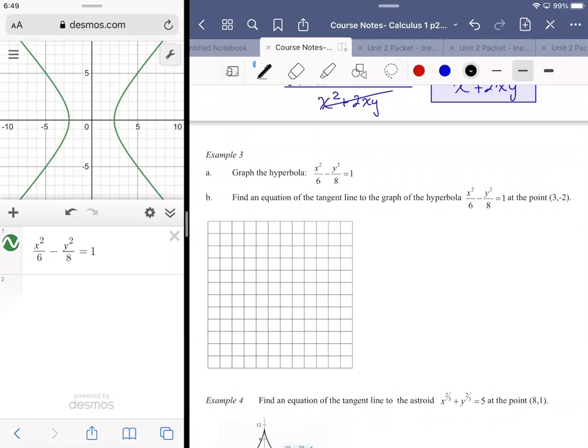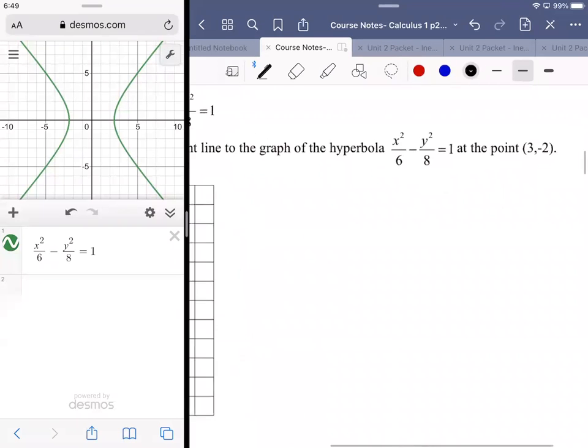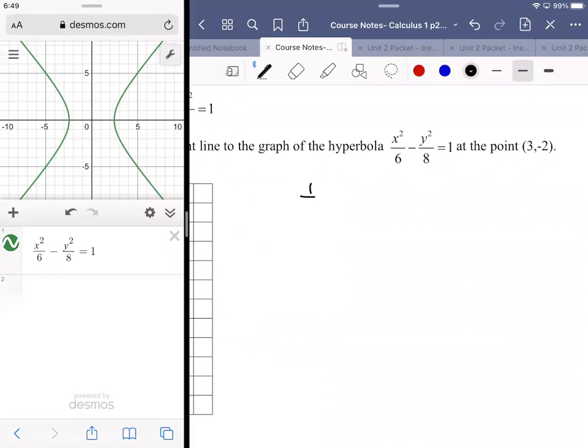So find an equation of the tangent line to the graph of the hyperbola at the point (3, -2). All right. That requires us to find a derivative. In order to find the derivative, I'm going to rewrite it slightly. One over six x squared minus one over eight y squared is equal to one. Very similar in structure to the circle problem that we did last time.